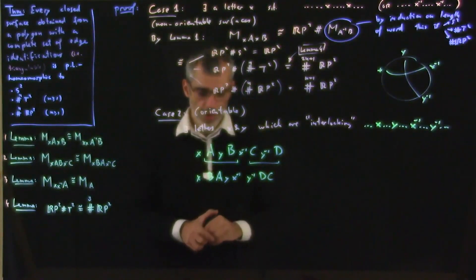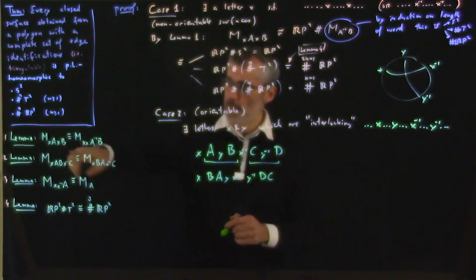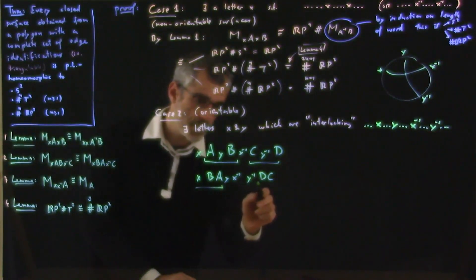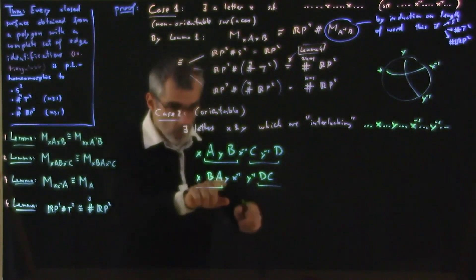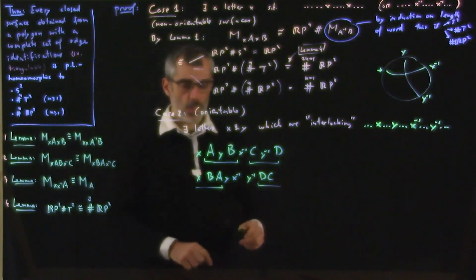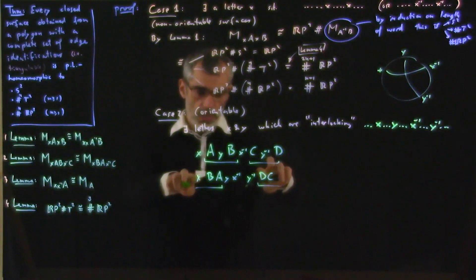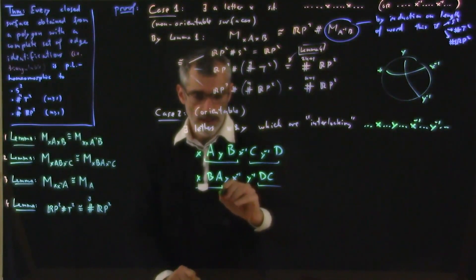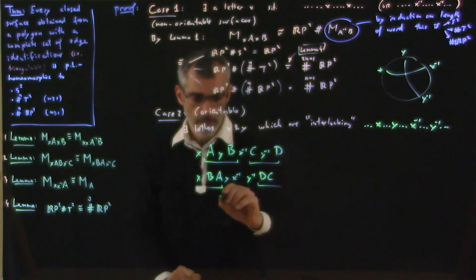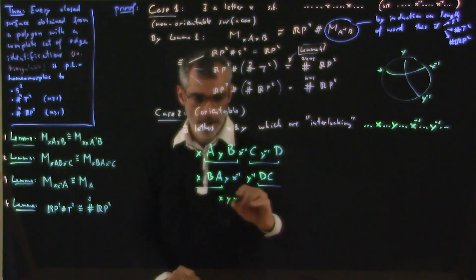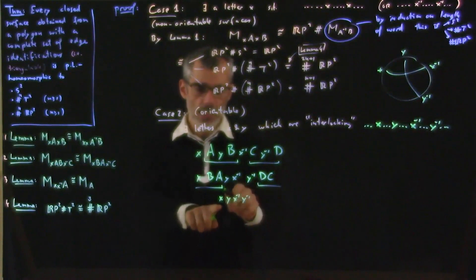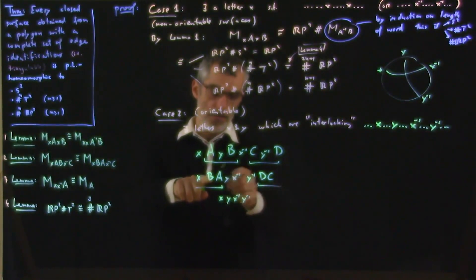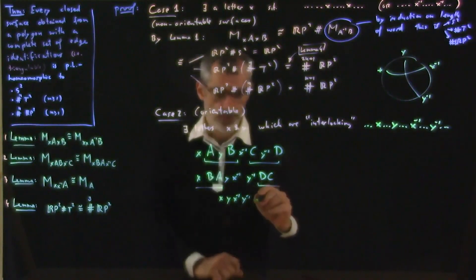And then finally, I'm going to apply once more the same lemma 2, but now to this chunk here, which is between this y and this y inverse. And by doing that, I'm going to do a cyclic permutation so that x is close. So I have x, y, x inverse, y inverse. And then the rest is, well, it's B, A, D, C, which I can, for example, put here.